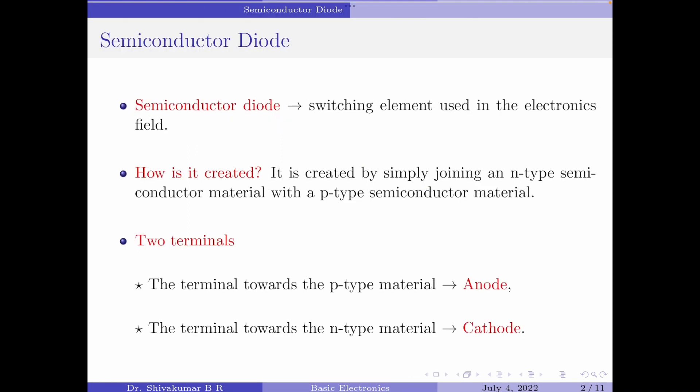A semiconductor diode is one of the most basic switching elements used in the electronics field. It is created by simply joining an n-type semiconductor material with a p-type semiconductor material.